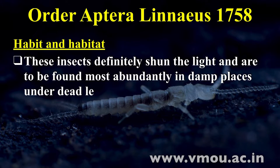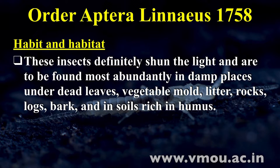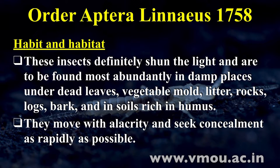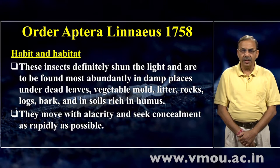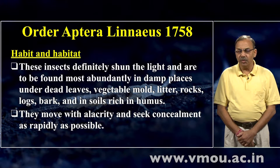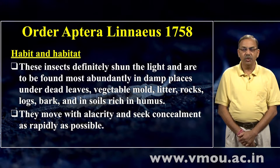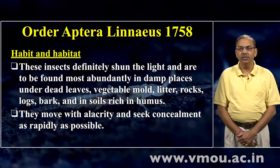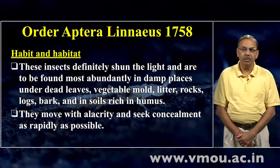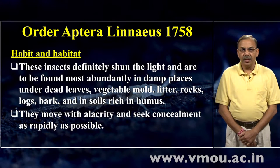इनकी habitat — these insects definitely shun the light and are to be found most often in damp places under dead leaves, vegetable mold, litter, rocks, logs, bark, and in soil rich in humus. ये कीड़े प्रकाश से दूर रहने के आदी हैं और अधिकतर सीलन वाले स्थान — मरी हुई सूखी या गीली पत्तियाँ, vegetable mold, algae, litter, चट्टानें, logs यानि मोटे-मोटे लठे, छाल और मिट्टी जिसमें काफी बड़ी मात्रा में humus हो — उसमें ये बहुत बड़ी संख्या में पाए जाते हैं।